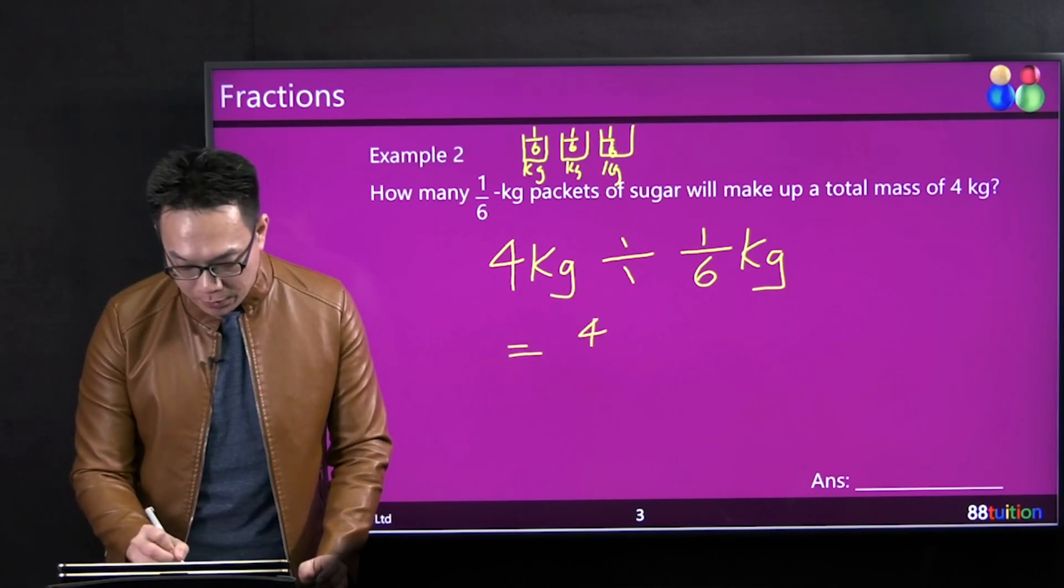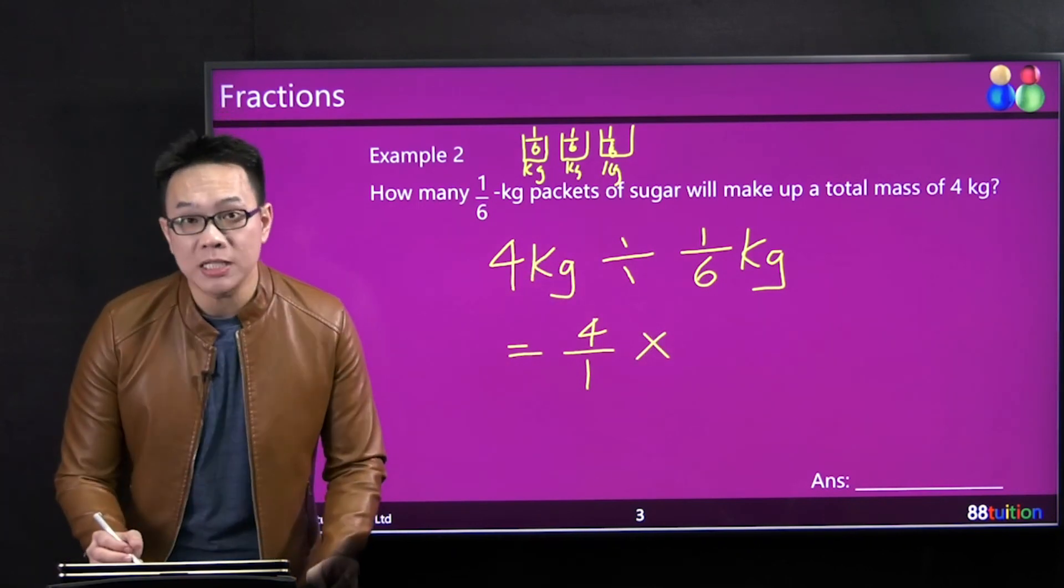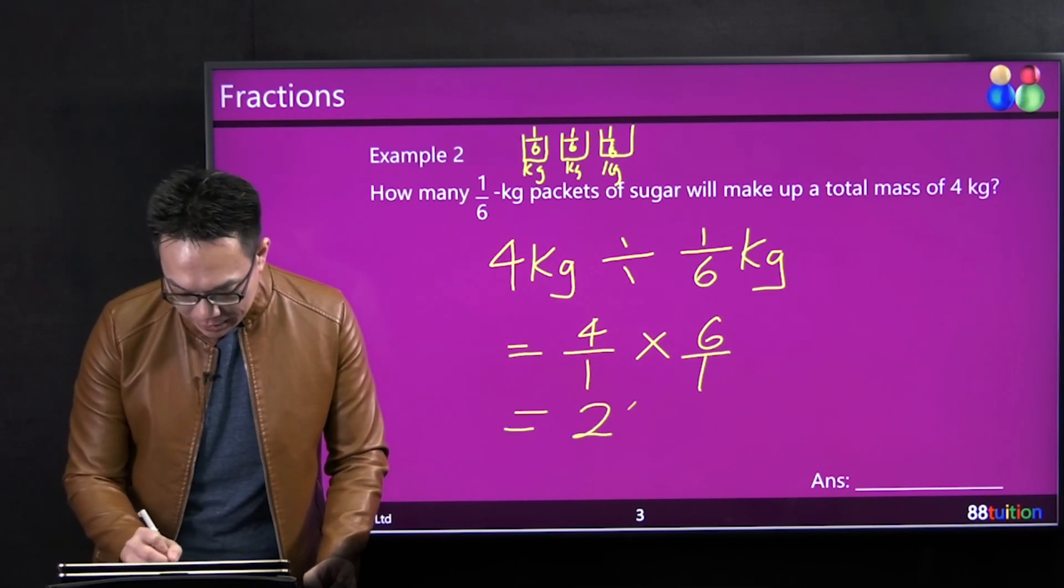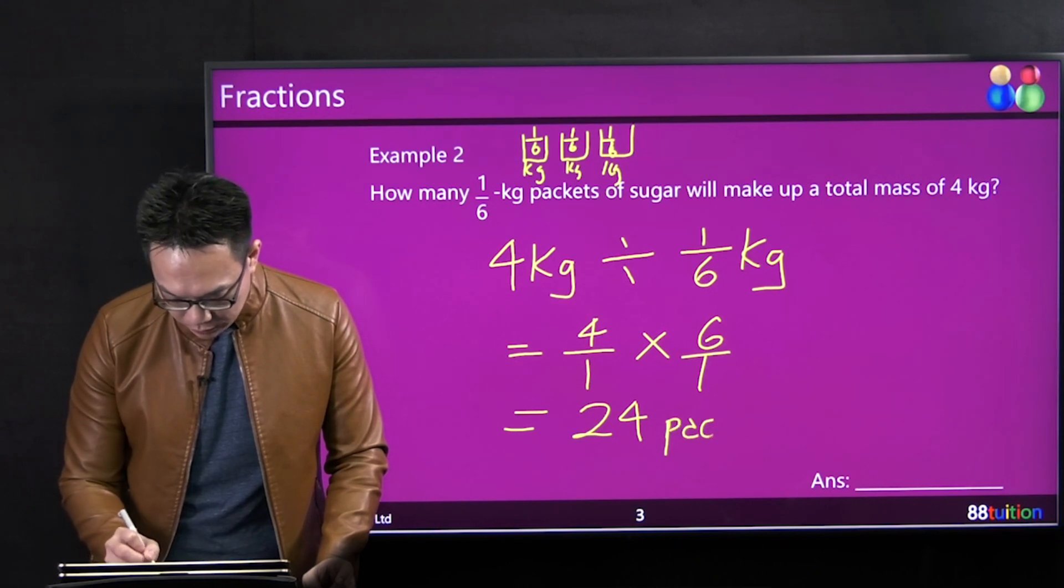Four is like 4/1. Division - change to times, flip the other side. 1/6 becomes 6/1, which represents 24 packets.